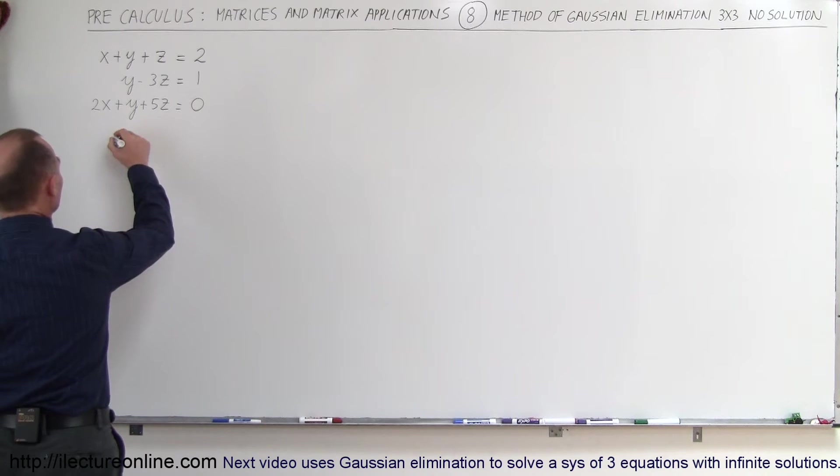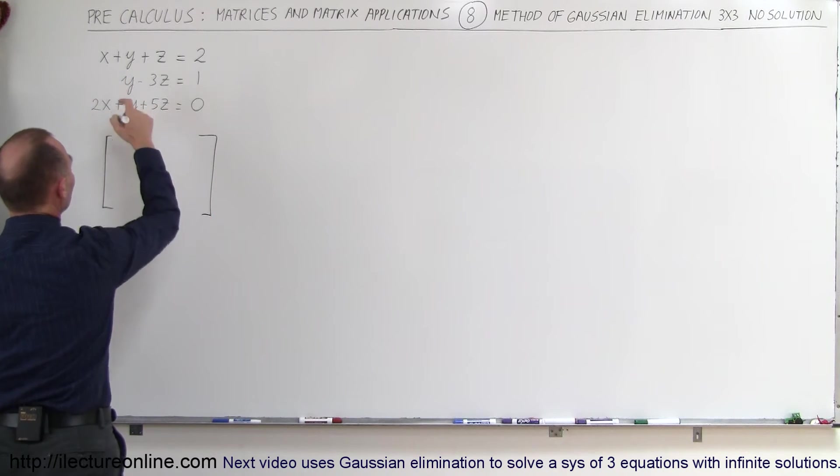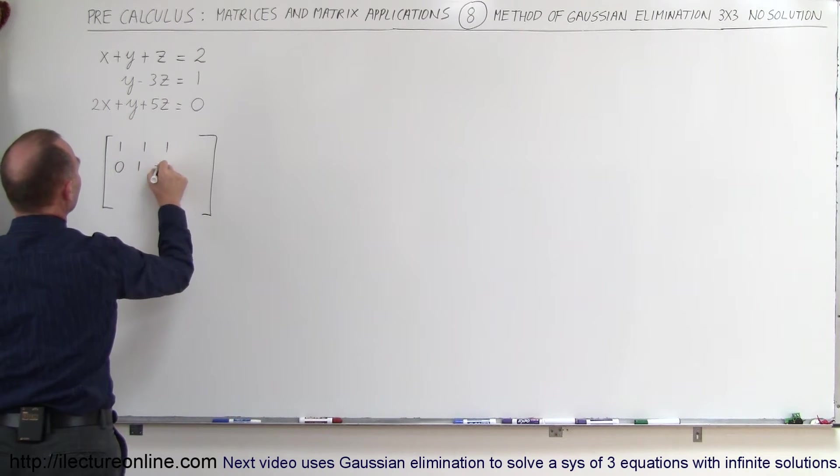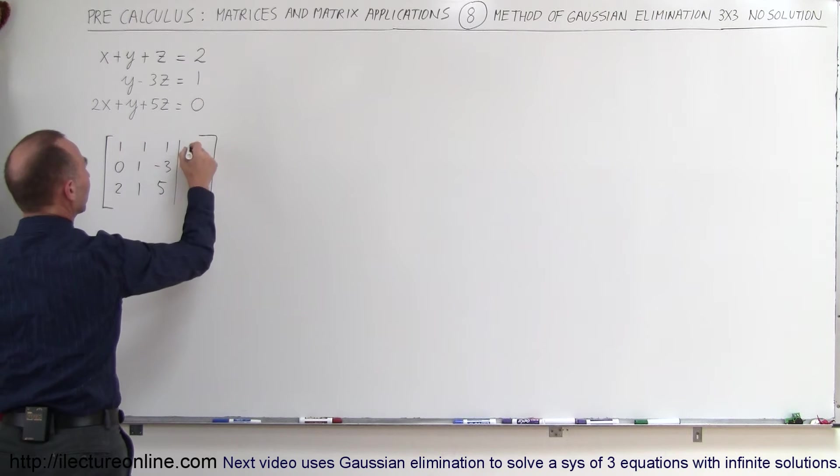We're writing the augmented matrix. On the left portion of the matrix, we put in the coefficients of x, y, and z. So we have a 1, a 1, a 1. Then we have a 0, a 1, and a negative 3. And here we have a 2, a 1, and a 5. And then on the right side here, we plug in the constants 2, 1, and 0.